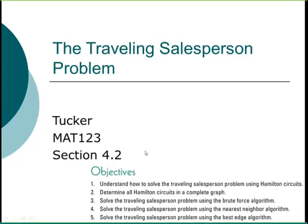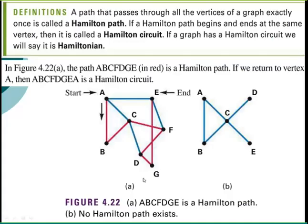In this lesson we're going to take a look at section 4.2 and the traveling salesperson problem. We're dealing with Hamilton paths, which are paths that pass through all the vertices of a graph exactly once.